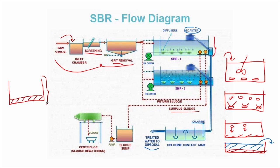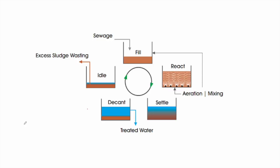To summarize, one full SBR cycle has five steps: the fill stage to receive incoming wastewater; the react stage to introduce oxygen through aeration and mixing; the settling stage for flocs to settle by gravity; the decant stage to remove treated water for tertiary treatment; and the idle stage to remove excess sludge and provide a brief operational break.